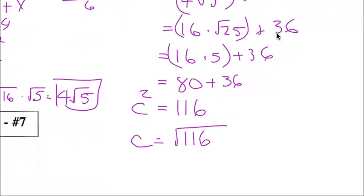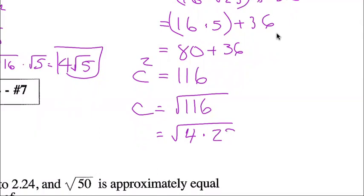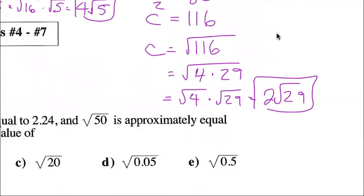So c equals the square root of 116. Simplifying: what perfect squares multiply into 116? Checking — it's 4 times 29. So the square root of 116 equals the square root of 4 times the square root of 29, which equals 2 square root 29. That's the exact value. The decimal value, from a calculator, is approximately 10.77.